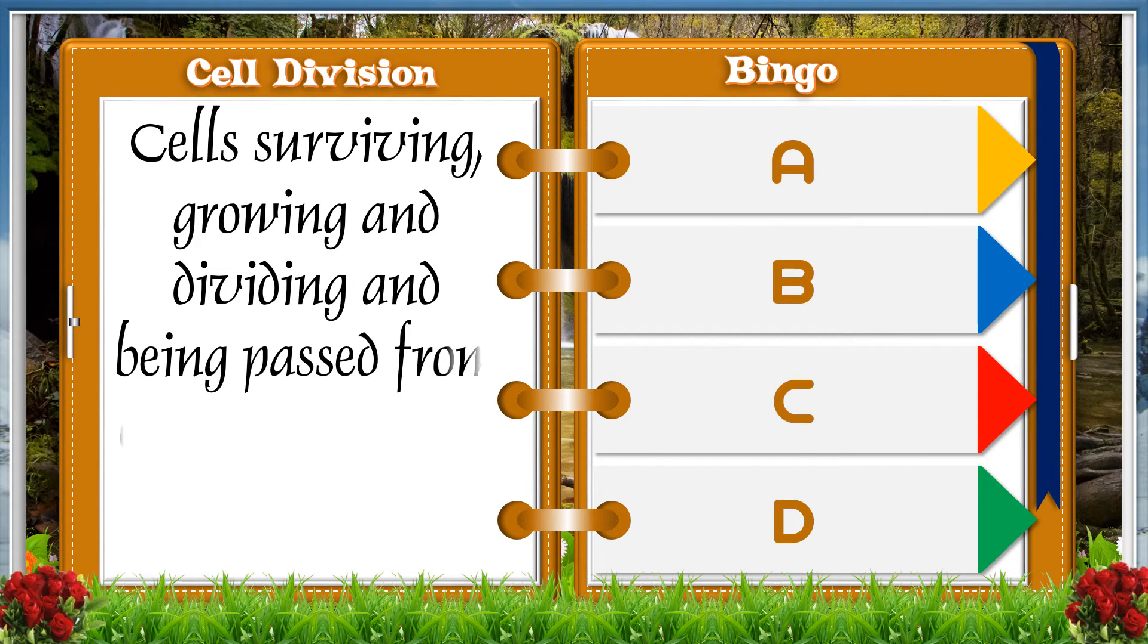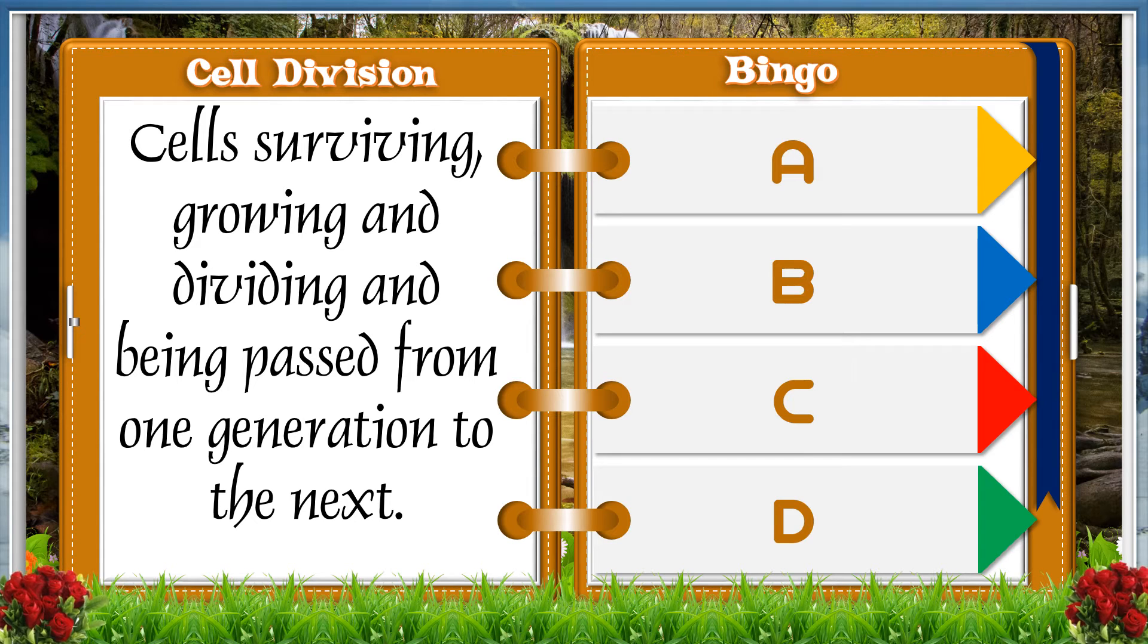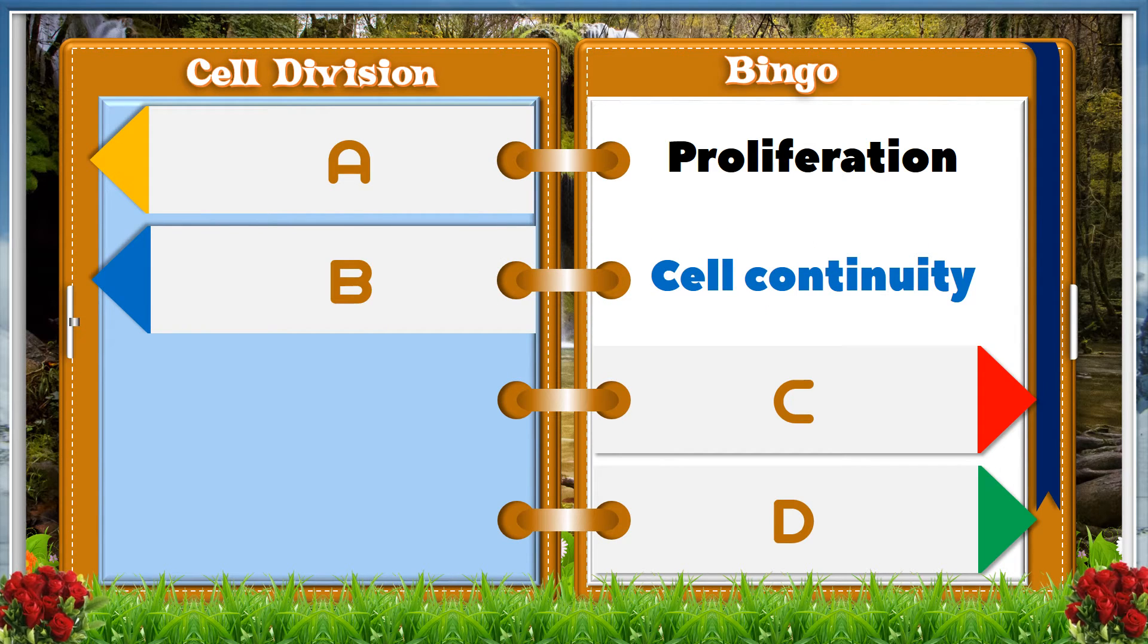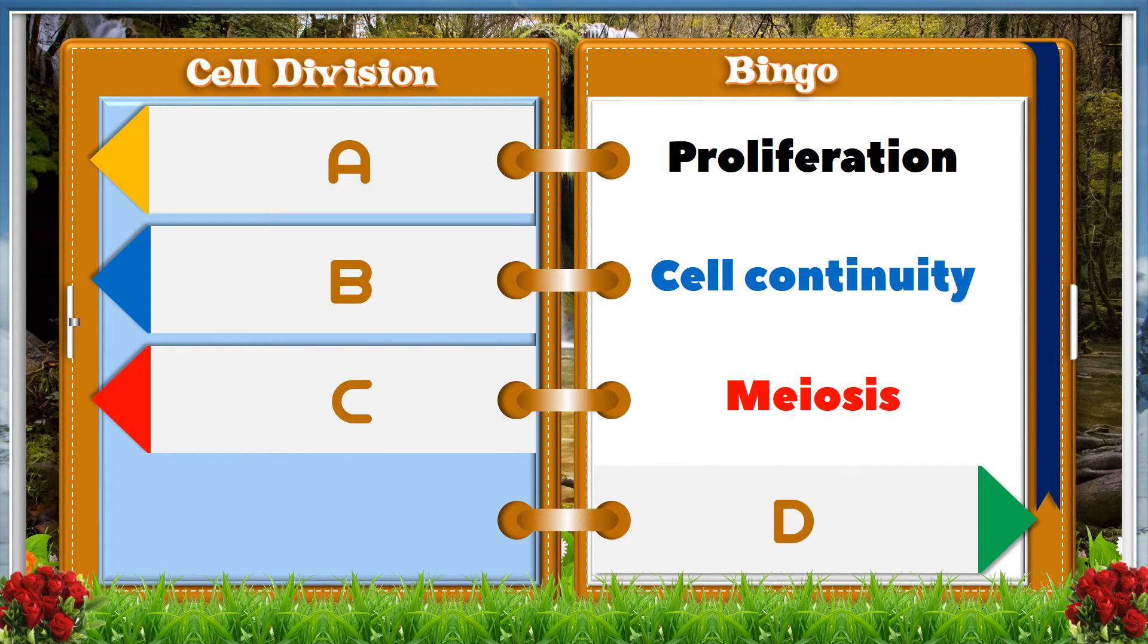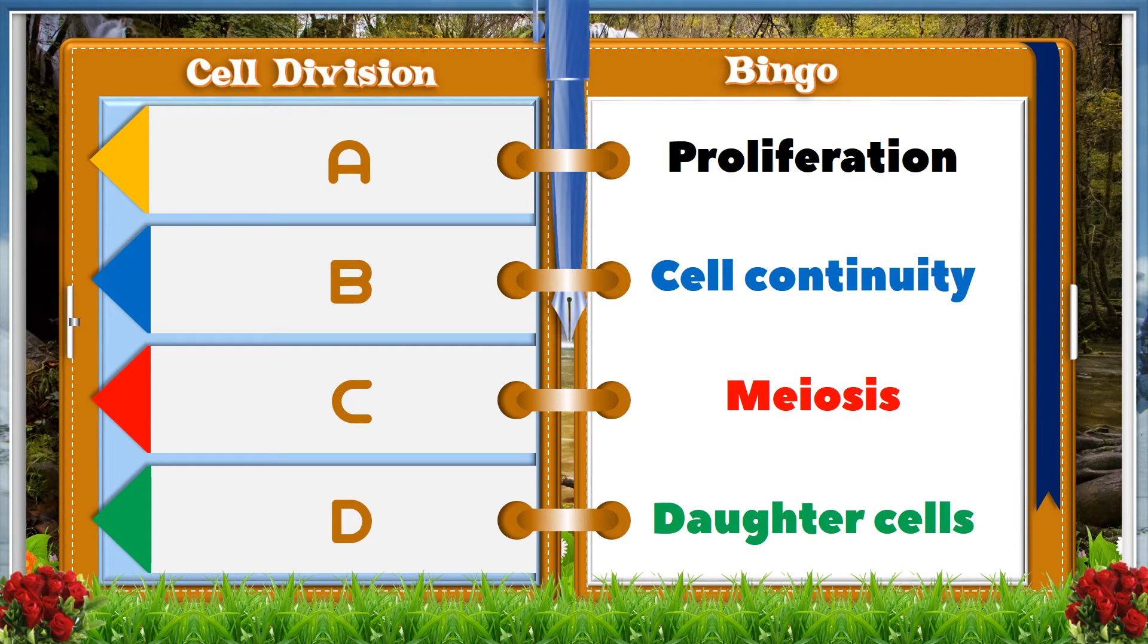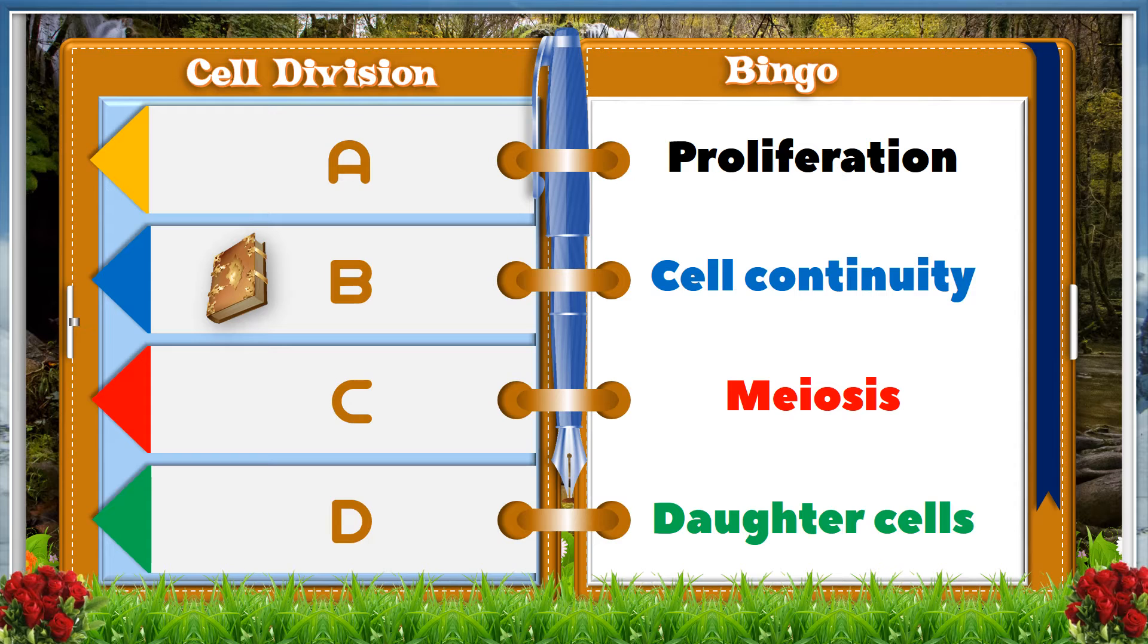Cells surviving, growing, and dividing and being passed from one generation to the next. A proliferation, B cell continuity, C meiosis, D daughter cells. And the answer is B cell continuity.